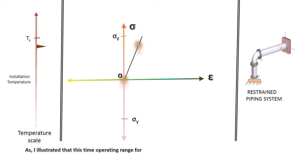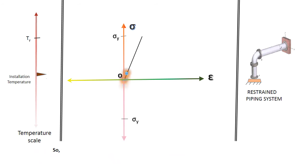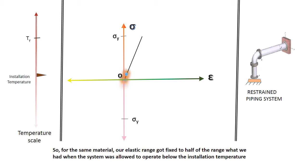As I illustrated, at this time the operating range for my system is between the installation temperature to the maximum temperature where yielding sets in. The system will be operating infinitely between the elastic range, which is equal to that of the elastic strength of the material. So for the same material, our elastic range got fixed to half of the range what we had when the system was allowed to operate below the insulation temperature.